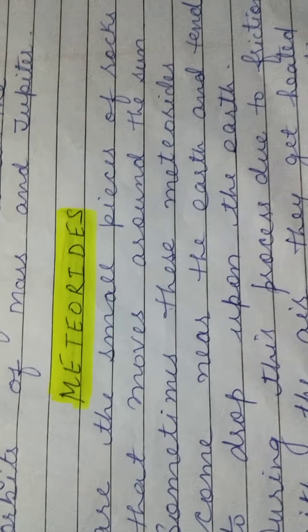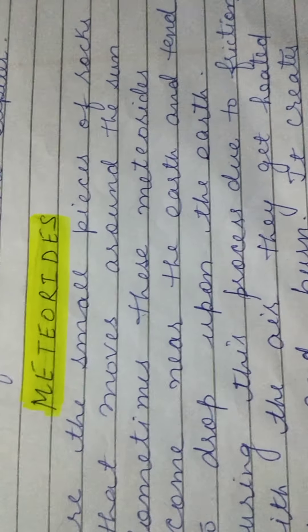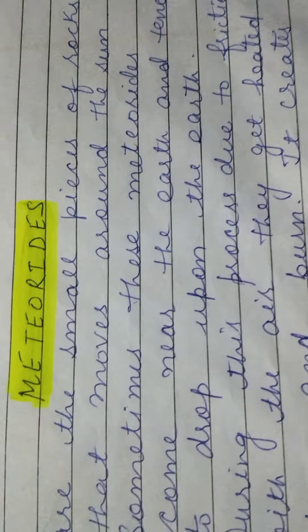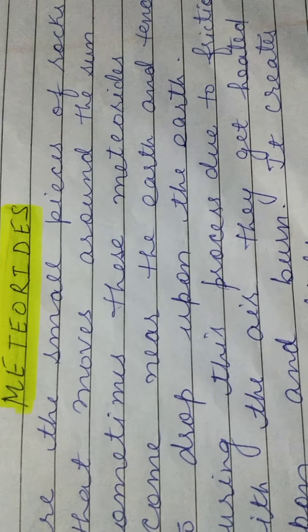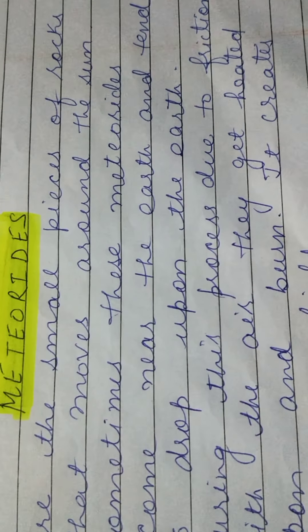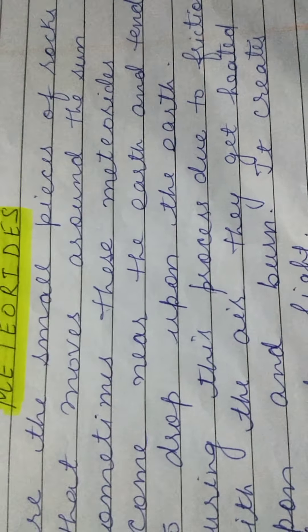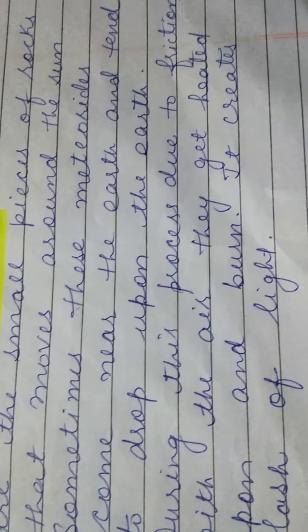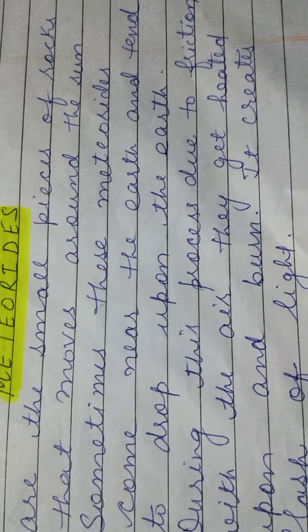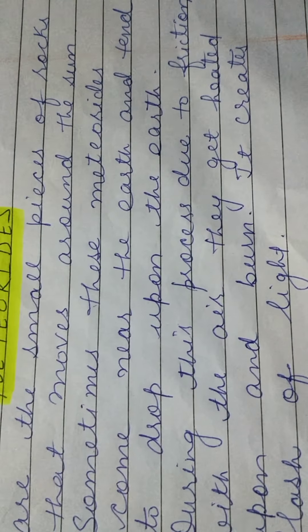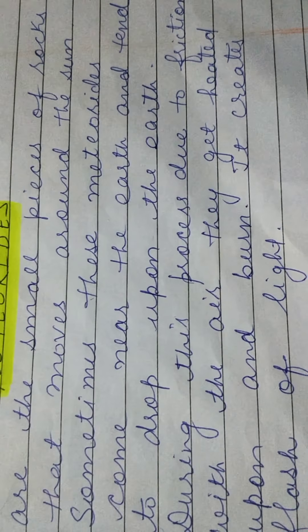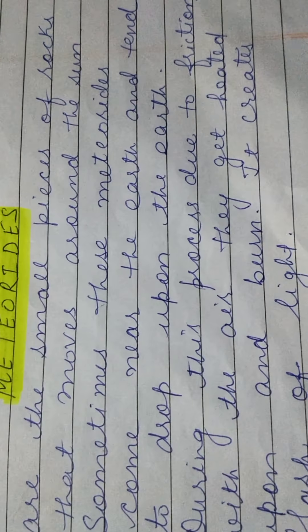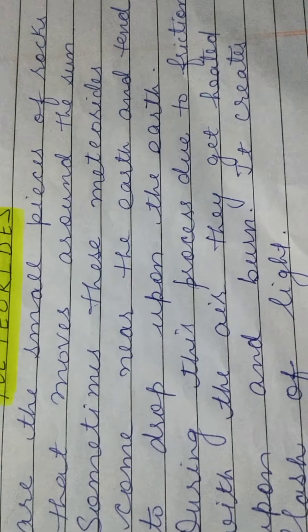Now, let's come to meteoroids. What are meteoroids students? Meteoroids are small pieces of rocks that move around the sun. Sometimes these meteoroids come near the earth and tend to drop upon it. When they hit the earth's atmosphere, due to friction with the air, they get heated and burn, creating a flash of light that you can see in the sky. These small pieces of rocks are also part of our solar system, moving around the sun like planets, satellites and asteroids.